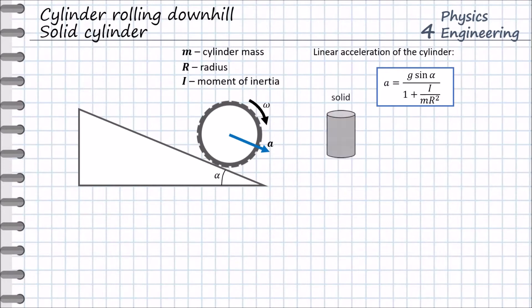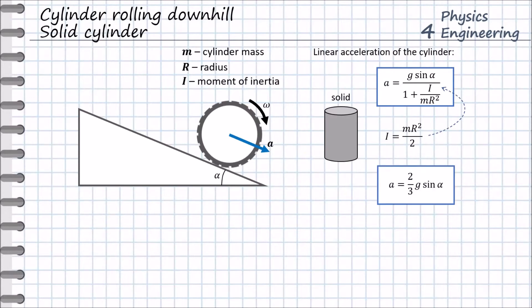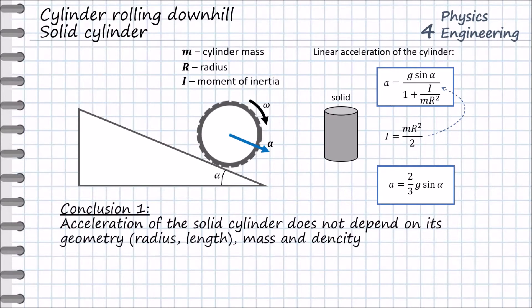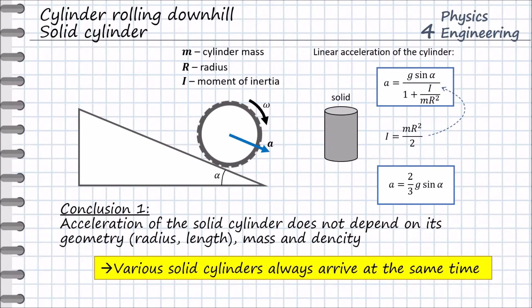As a next step, we need to consider the moment of inertia of the solid cylinder and substitute it into the equation of the linear acceleration. As a result, the linear acceleration is defined as follows. From this equation, we can already make the first conclusion that the acceleration of the solid cylinder does not depend on its geometry, radius, length, and also its mass and density. The consequence of this conclusion is that various solid cylinders always arrive at the same time.